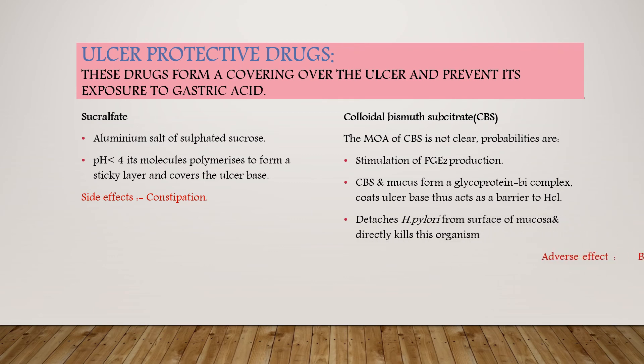Another drug is colloidal bismuth substrate. Its mechanism of action is not entirely clear, but probable actions include stimulation of prostaglandin E2 production. Colloidal bismuth substrate forms a glycoprotein bi-complex with mucus, which coats the ulcer base and acts as a barrier to hydrochloric acid. It also detaches H. pylori from the surface epithelium and may directly kill the organism. Adverse effects are blackening of the tongue and bismuth toxicity.